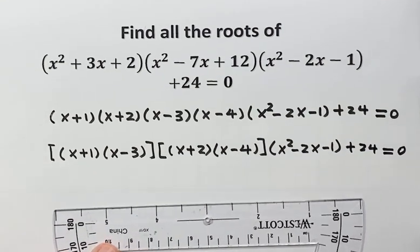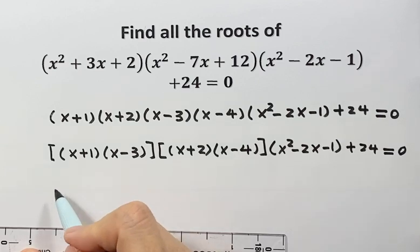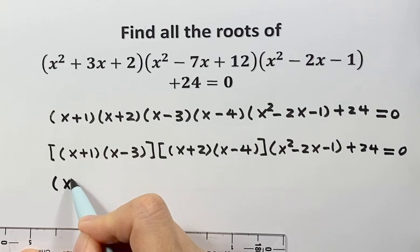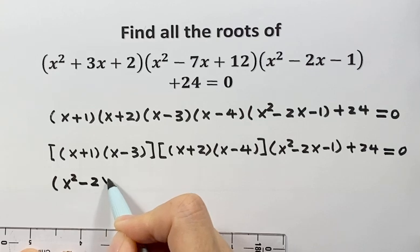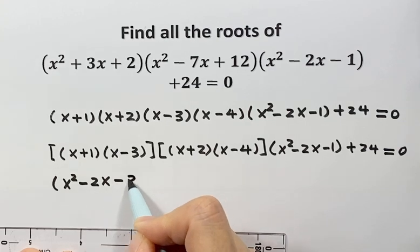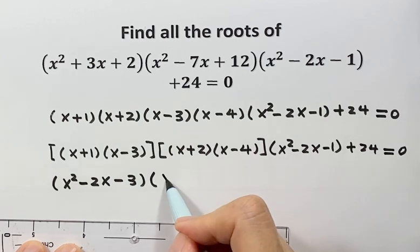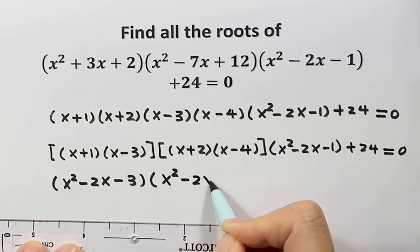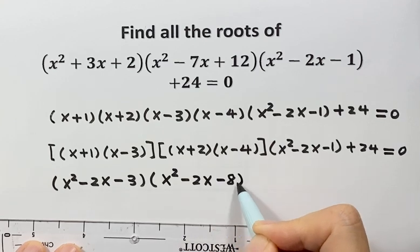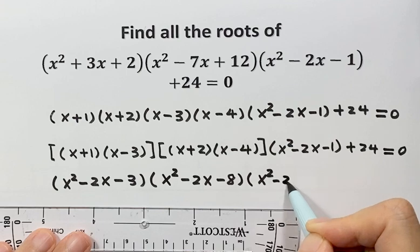Next we are going to expand this product. Here we have x squared minus 2x minus 3. Then for the second one, expand this part, so we have x squared minus 2x minus 8, then the rest of the equation.